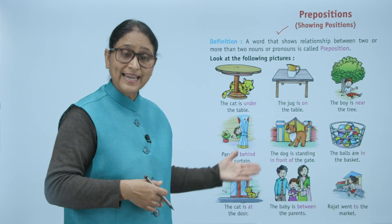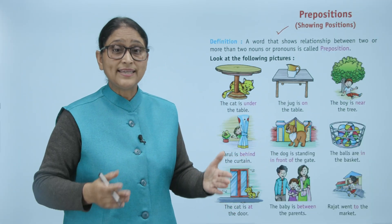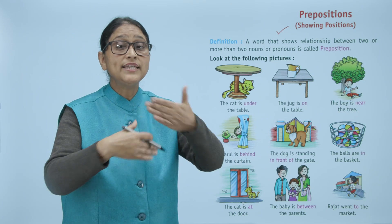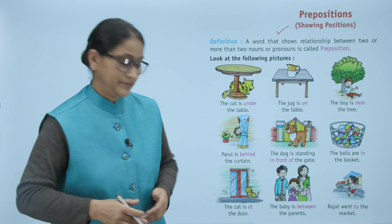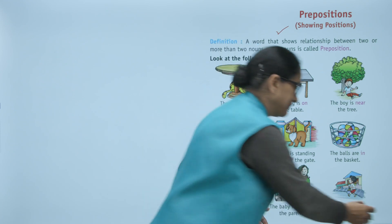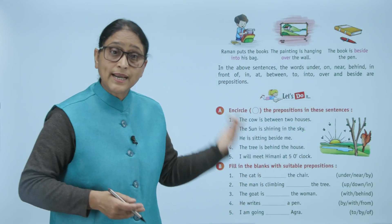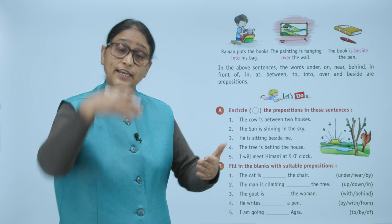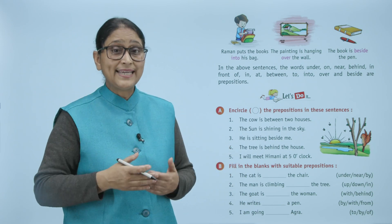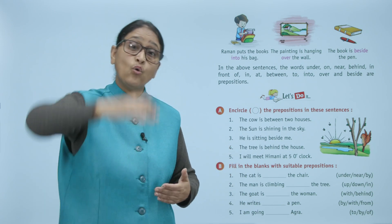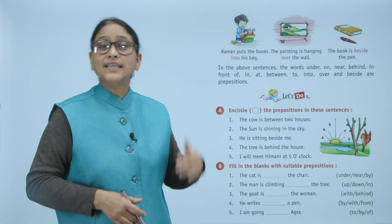The cat is at the door. The baby is between the parents. Rajat went to the market. Raman puts the books into his bag. The painting is hanging over the wall. The book is beside the pen.